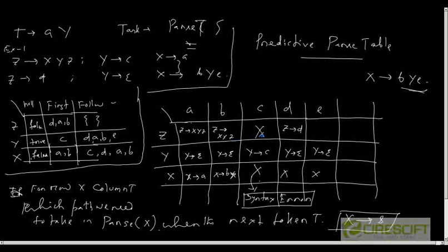The unique feature of this Predictive Parse Table is that for a given non-terminal, which is represented as a row in this table, and for the given next token, I can decide what production I should choose for parsing.